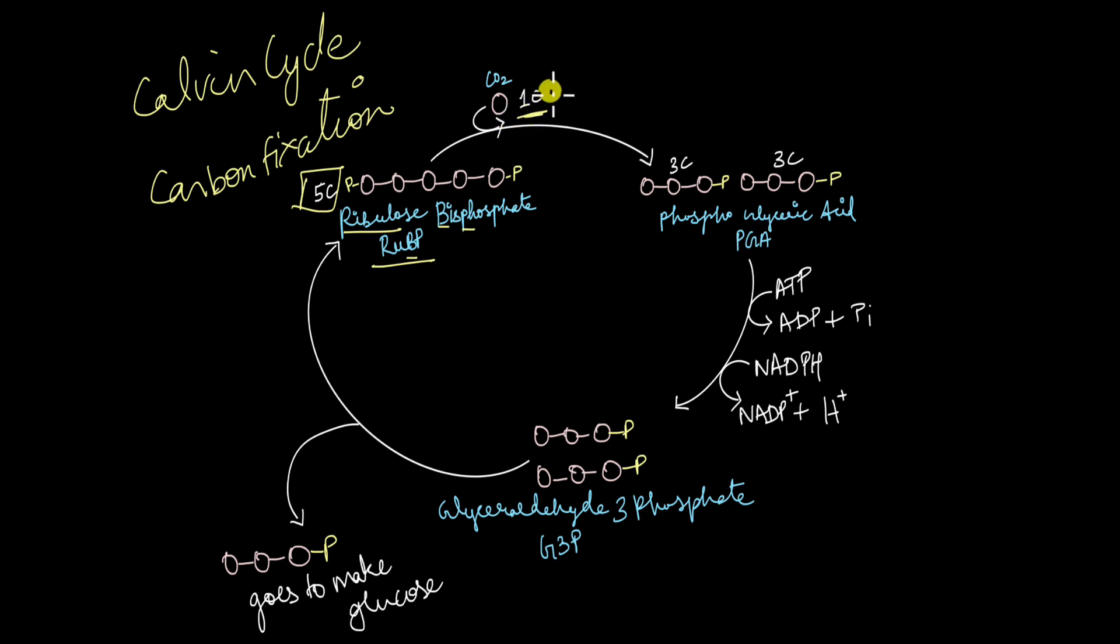This is going to combine with this one carbon compound or carbon dioxide in the presence of rubisco. This is where rubisco catalyzes this reaction. Five carbon compound combines with this carbon dioxide to give a very short lived six carbon intermediate which is immediately split into two three carbon compounds known as phosphoglyceric acid or PGA. Each of this is a three carbon compound. So here you have six carbons that is splitting into two three carbon compounds.